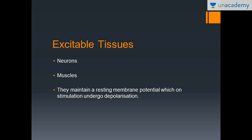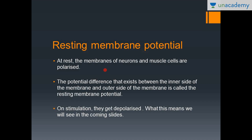The excitable tissues in your body are the neurons and the muscles. What makes them excitable is this resting membrane potential — neurons can fire and the muscles can contract. At rest, the membranes of the neurons and the muscle cells are polarized. That means the potential difference that exists between the inner side of the membrane and the outer side is called the resting membrane potential. Polarization means a difference in potential between the inner side and the outer side of the membrane.